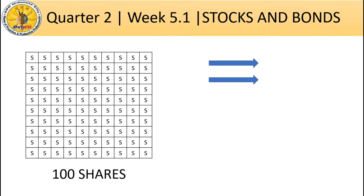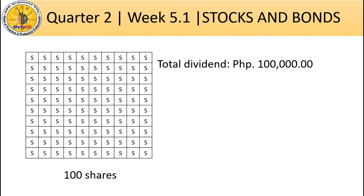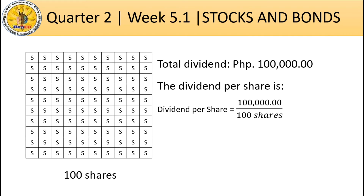Suppose a certain company opens 100 shares and you buy one share. That would be 1 over 100 — that 1 is your share and 100 is the total number of shares. Since you bought one share in the company, you can now be called a shareholder or stockholder. Now suppose the total dividend of the company is 100,000 pesos. That 100,000 pesos will be equally divided per share, so the dividend per share is 100,000 divided by 100 shares, which equals 1,000 pesos per share.